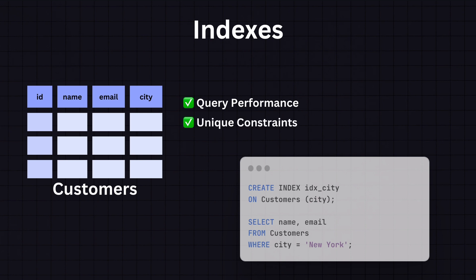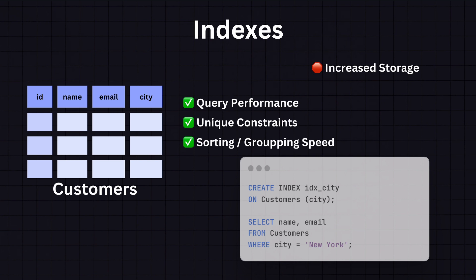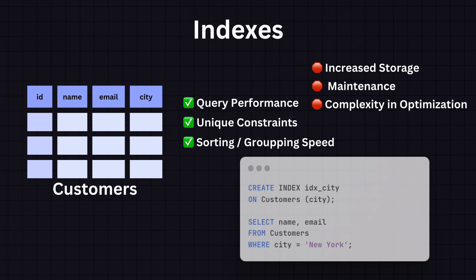Indexes can also enforce uniqueness for columns when you want to ensure that no two rows have the same value in certain columns. They also improve the speed of data retrieval by effectively locating and returning the data, and are particularly beneficial for queries involving joins, ORDER BY, and GROUP BY clauses. But they come with trade-offs: one is increased storage, as each index consumes additional disk space depending on the table size and the number and type of columns indexed. They also add maintenance overhead — indexes need to be updated whenever data is inserted, deleted, or updated, meaning write operations can be slower, and too many indexes can make the query optimizer's job harder, potentially leading to suboptimal query plans.